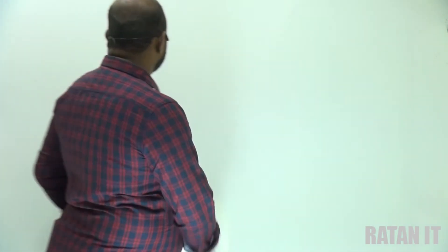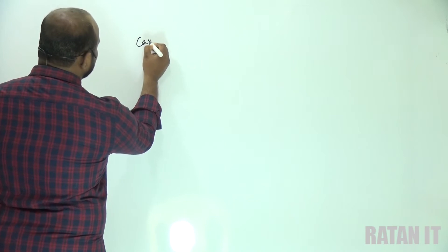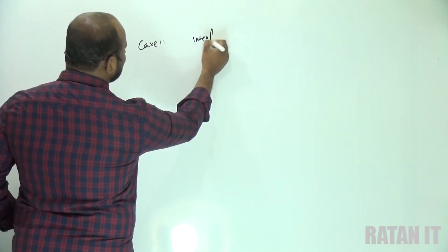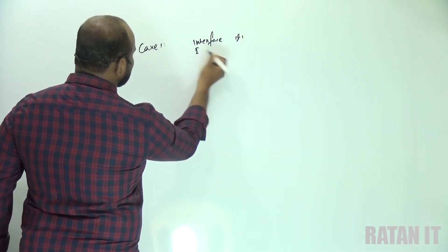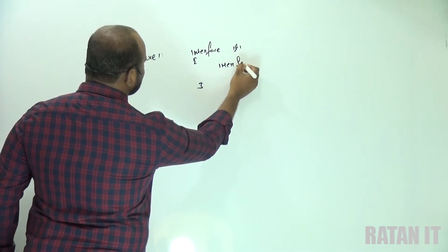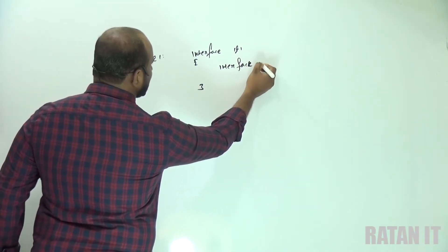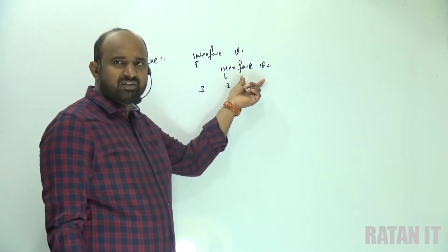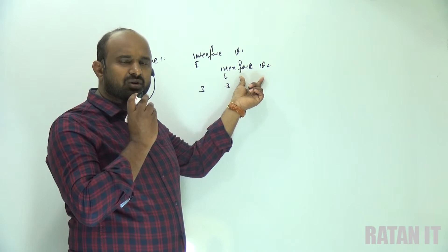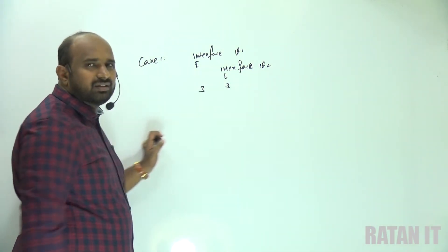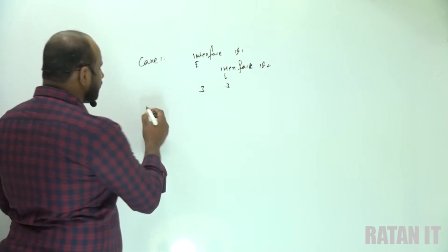So how many cases do we have in total? Three cases. The first case is declaring an interface inside another interface. The syntax is simply: interface id1 { interface id2 { } } — this is called a nested interface. I will do this example practically.